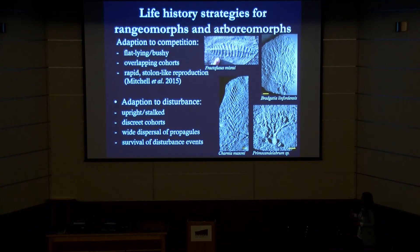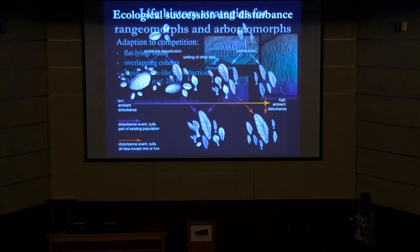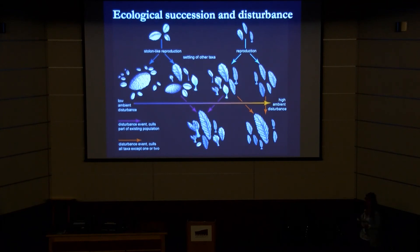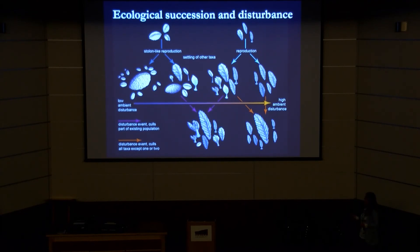We also have really good evidence that upright and stalked forms were able to survive disturbance events. Piecing this all together, we can get an idea of how succession might have worked in an Ediacaran community. Where there's very low disturbance, Fractifusis colonises the surface to the exclusion of most other taxa, as seen at the H14 surface in Bonavista.